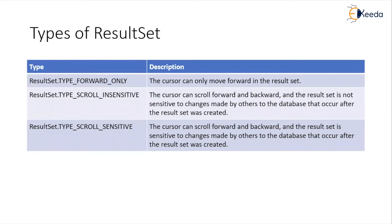The types of result set are: type forward only, type scroll insensitive, and type scroll sensitive. In the first type — type forward only — the cursor can move only in the forward direction. So you can navigate from the first record in the result set to the next, and so on. This is the default result set which is created.